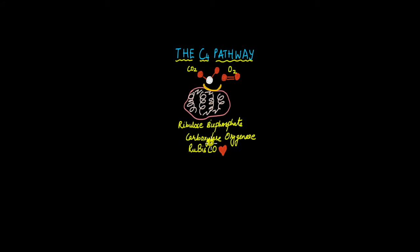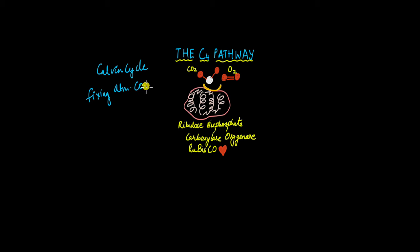Let's show some love to this beautiful enzyme ribulose bisphosphate carboxylase oxygenase, otherwise known as Rubisco. It is the most abundant protein and enzyme found on Earth. This enzyme is involved in the Calvin cycle, fixing atmospheric carbon into a form that can be used by plants to produce energy — basically sugars in the form of glucose and other carbohydrates.